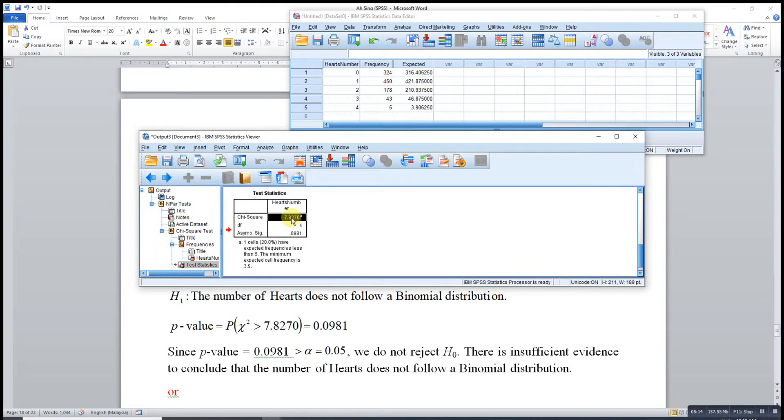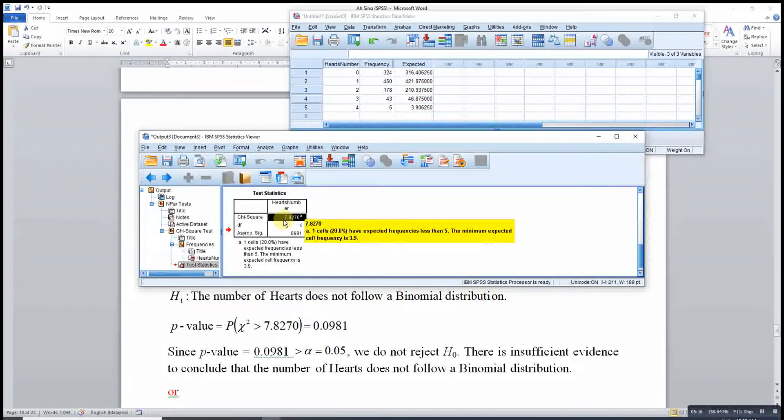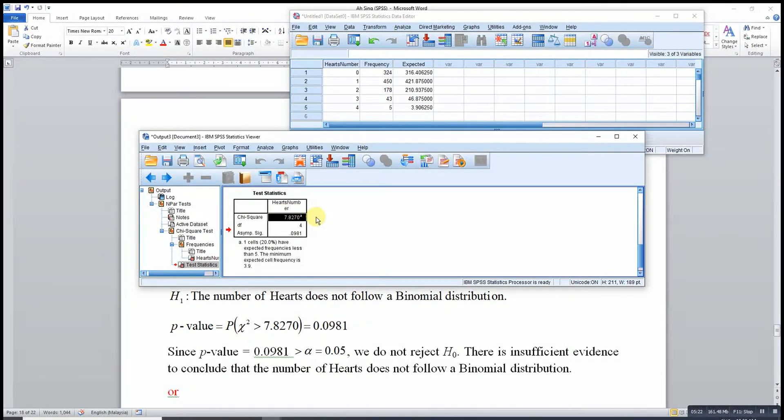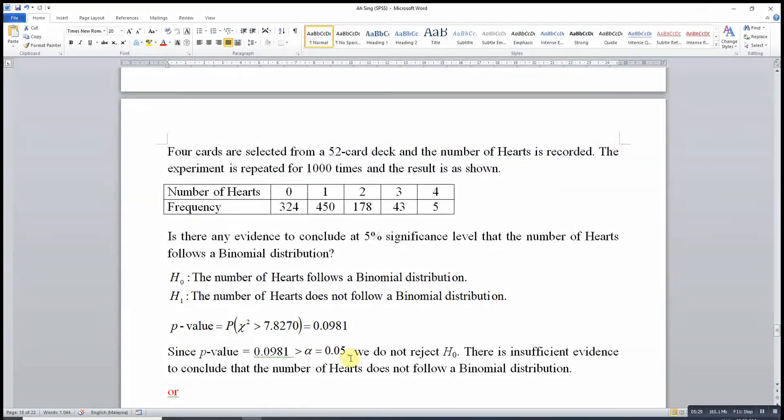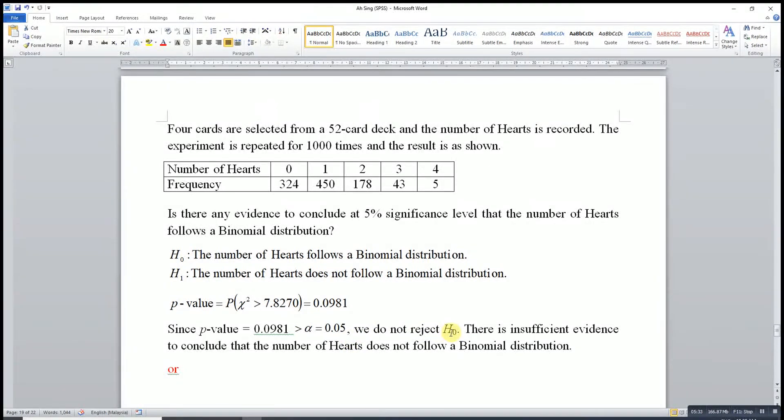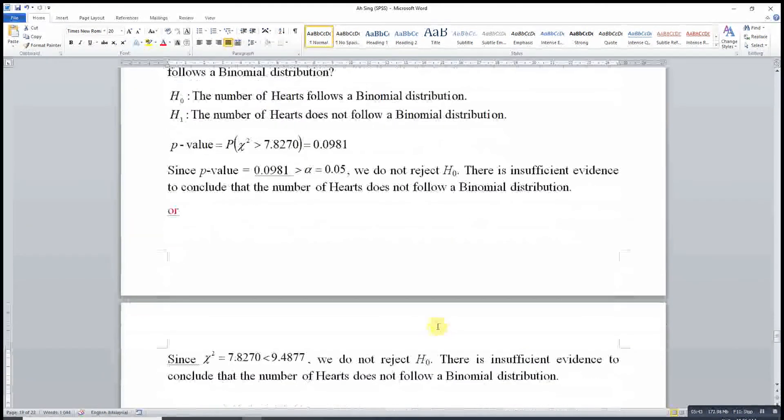From here we can see that the test statistic that we obtain is chi-square equals 7.8270. And this gives us the p-value equal to 0.0981, which is greater than the significance level.